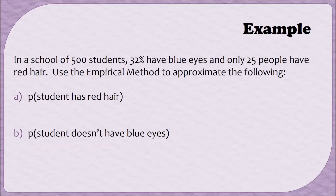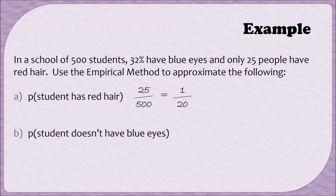Let's do an example. In a school of 500 students, 32 percent have blue eyes and only 25 people have red hair. Use the empirical method to approximate each of the following. Part A asks to approximate the probability that a student has red hair. Since there are 25 people who have red hair, that will be the numerator, and since there are 500 students total, that will form the denominator. I noticed that 25 goes into both 25 and 500, so this fraction can be simplified to 1 out of 20. In decimal form, that would be 0.05.